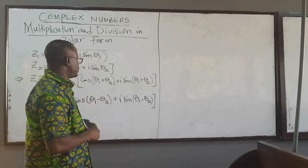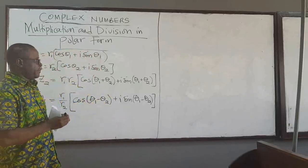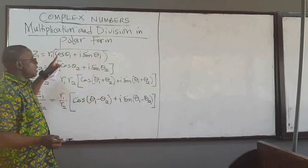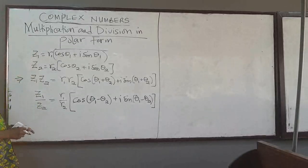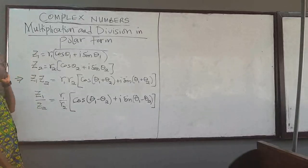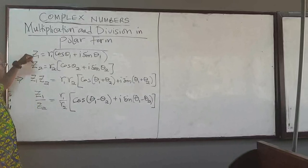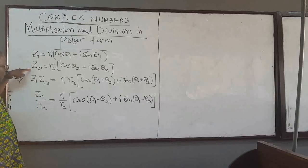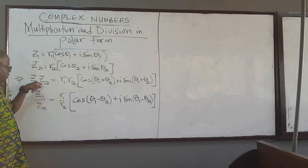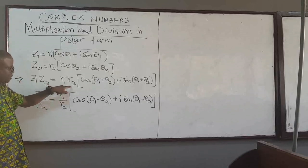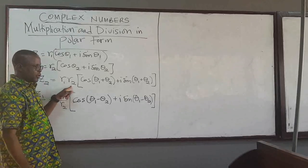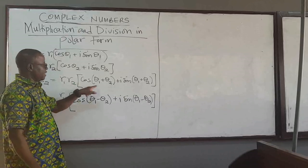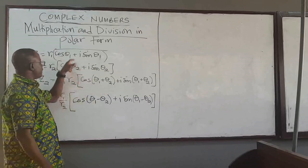In this lecture, we want to continue from where we left off for multiplication of complex numbers in polar form. We showed in the previous lecture that if you have two complex numbers in polar form, z1 and z2, if you multiply them, the modulus of the product is the product of the moduli, and the argument is the sum of the arguments of the two complex numbers.